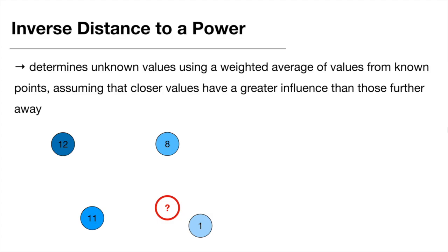This is a weighted average interpolator, meaning the value assigned to our unknown point will be an average of all surrounding points — but not just a regular average summing all of them up and dividing by 4. Instead, the algorithm assumes that values closer to our unknown point are more closely related, so it assigns each of these points a weight.